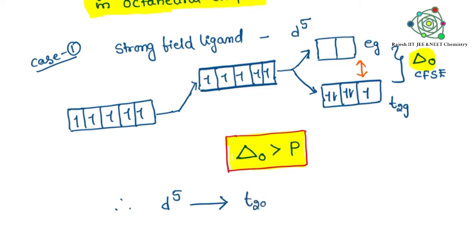So the d5 configuration is changing to T2G⁵ and EG⁰. The d5 configuration changes like this — overall one single unpaired electron is present. This is the result with respect to a strong field ligand.